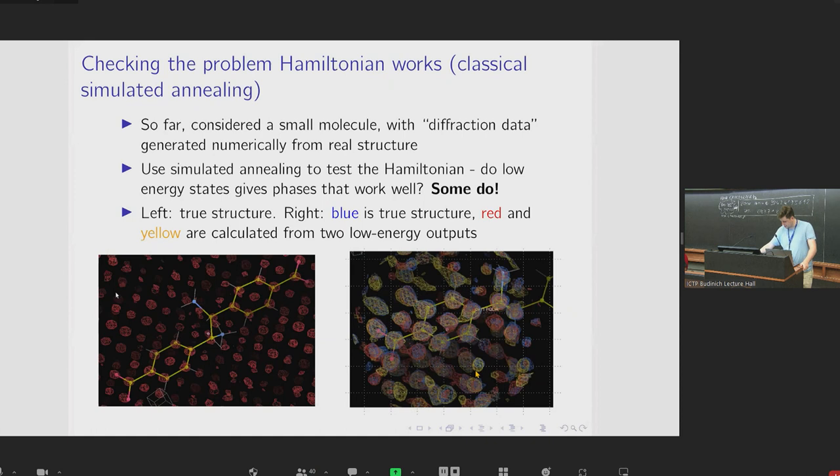So these two pictures here demonstrate this. So on the left is a picture of the true structure. The picture on the right shows some low energy outputs. So the blue regions in that picture on the right are the electron density of the real structure. So basically the same as is in the figure on the left. But the red and yellow regions show electron densities calculated from low energy outputs from the simulated annealing. And it can be seen that although there are some erroneous regions, there is quite a lot of overlap between the predicted structures and the real structures.